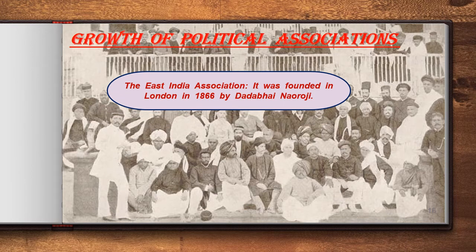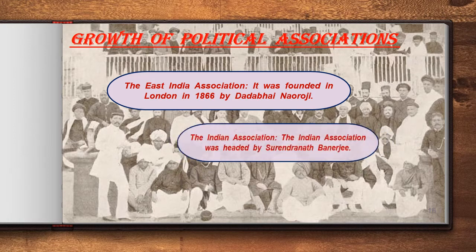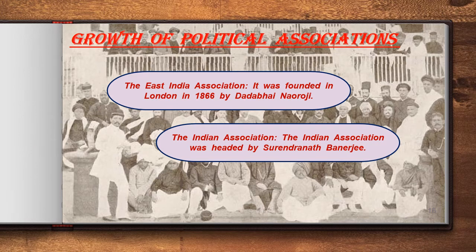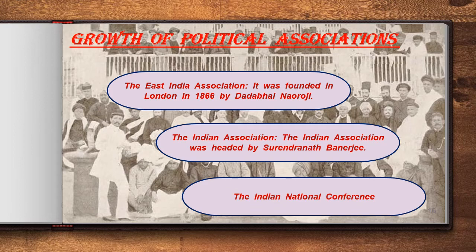The East India Association was founded in London in 1866 by Dadabhai Naoroji. It voiced the grievances of Indians to the British Parliament and suggested remedial measures. The Indian Association was headed by Surendranath Banerjee, and its members included lawyers, professionals, and educated middle-class Indians. The Indian National Conference was founded in 1883 at Calcutta, and its first meeting was convened by Surendranath Banerjee. It offered a model for the Indian National Congress, which was formed two years later.